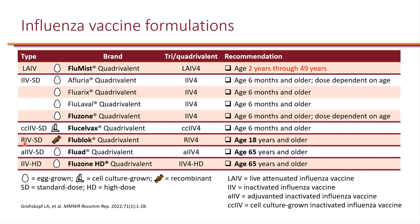We also have recombinant influenza vaccine, which uses recombinant biotechnology to make the vaccine in a lab — essentially developed using organisms inside the lab. Flublok is the available formulation; however, it is only approved for age 18 years and older, so it may not be used in children.